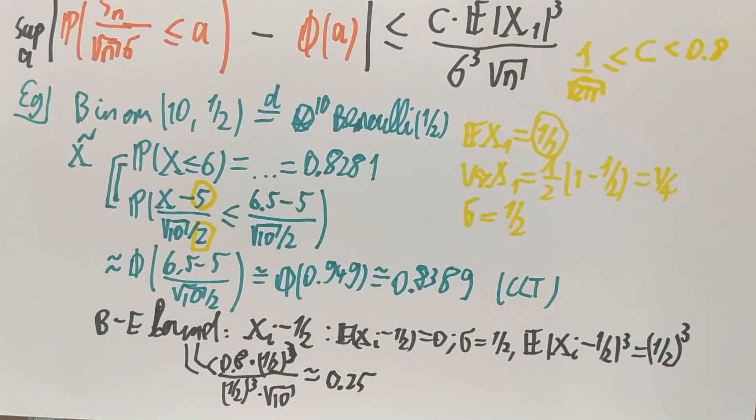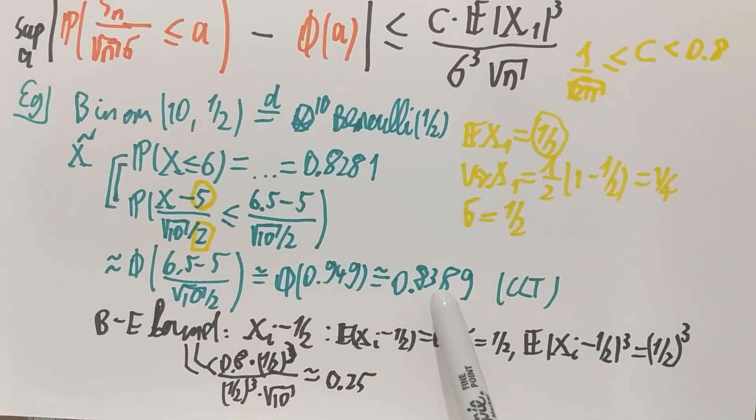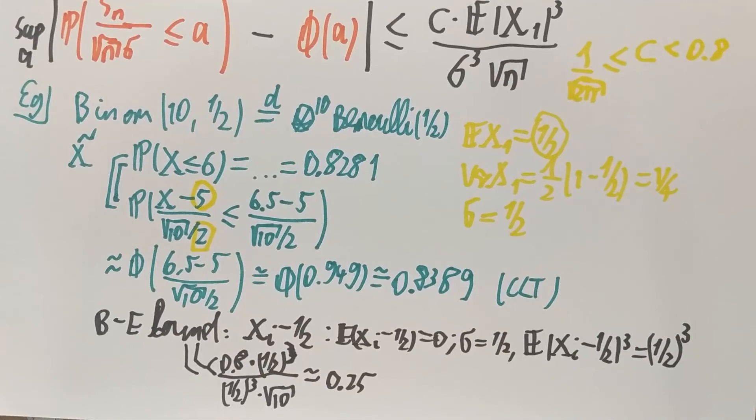So the Berry-Esseen theorem tells us that the true probability and the central limit theorem approximation is not further apart than 0.25 in this case. The bound is true, they are quite close, actually much closer than 0.25, so usually the Berry-Esseen bound is pretty weak. There are improvements on it, but in this form, it's very general, but usually a very weak approximation.